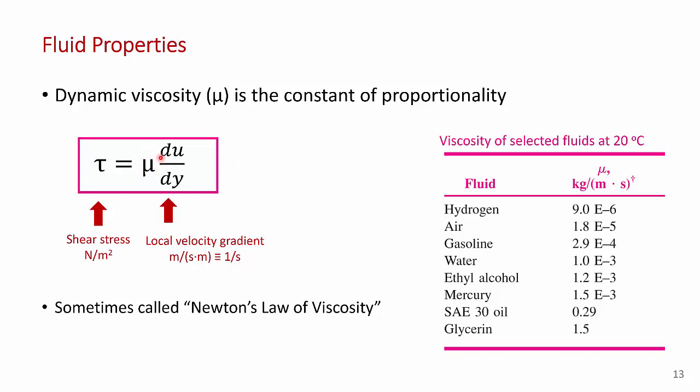This equation is sometimes called Newton's law of viscosity: the shear stress tau equals the dynamic viscosity mu times the local velocity gradient du/dy. Shear stress has units of pascals (newtons per meter squared), and the velocity gradient has units of one over second. The constant of proportionality is dynamic viscosity. I've shown here a table from your book of selected fluids at 20 degrees C, and you can see the dynamic viscosity varies tremendously — something thick like glycerin or engine oil is very high, water is about three orders of magnitude less, and air has even lower viscosity than water.